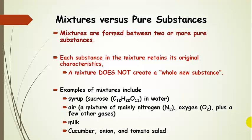Now let's talk about mixtures versus pure substances — how can you tell the difference? When you put two or more pure substances together, you're going to get a mixture. Each substance in the mixture retains its original characteristics — it is still chemically distinct. You can mix them together, but each substance retains its chemical nature. When you make a mixture, you don't create a whole new substance. You can separate mixtures using various physical separation methods. Examples of mixtures include syrup — that's sucrose in water. If you were to evaporate off all the water, you'd be left with the sucrose. Air is another mixture — mainly nitrogen, oxygen, and a few other gases like argon.